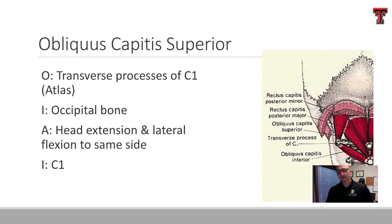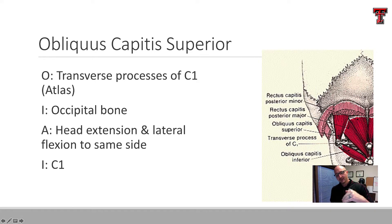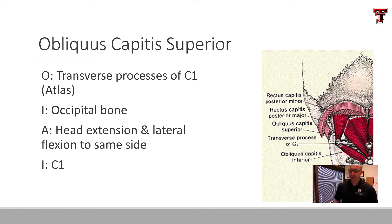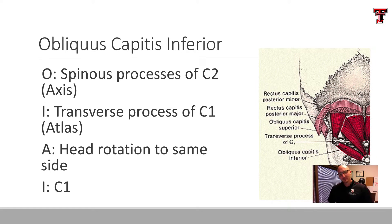The obliquus group — anytime we see the term oblique, just like in the abdomen or trunk, it's not running in a true straight plane orientation. The obliquus capitis superior runs superiorly and medially, and the obliquus capitis inferior runs inferiorly and medially. It originates on the transverse process of the atlas and inserts into the occipital bone. It's a head extensor and lateral flexor to the same side. Consider just how short these muscles are and how small the lever arms are — these are not muscles of power or strength. These are muscles of position, fine movers.